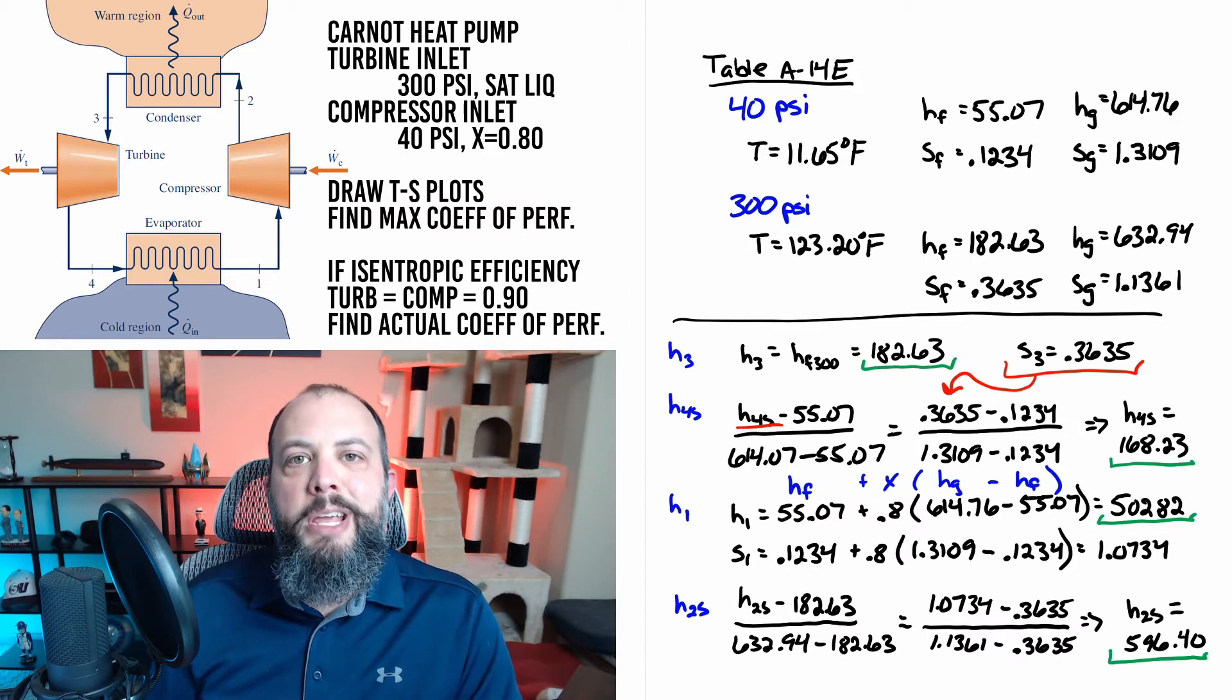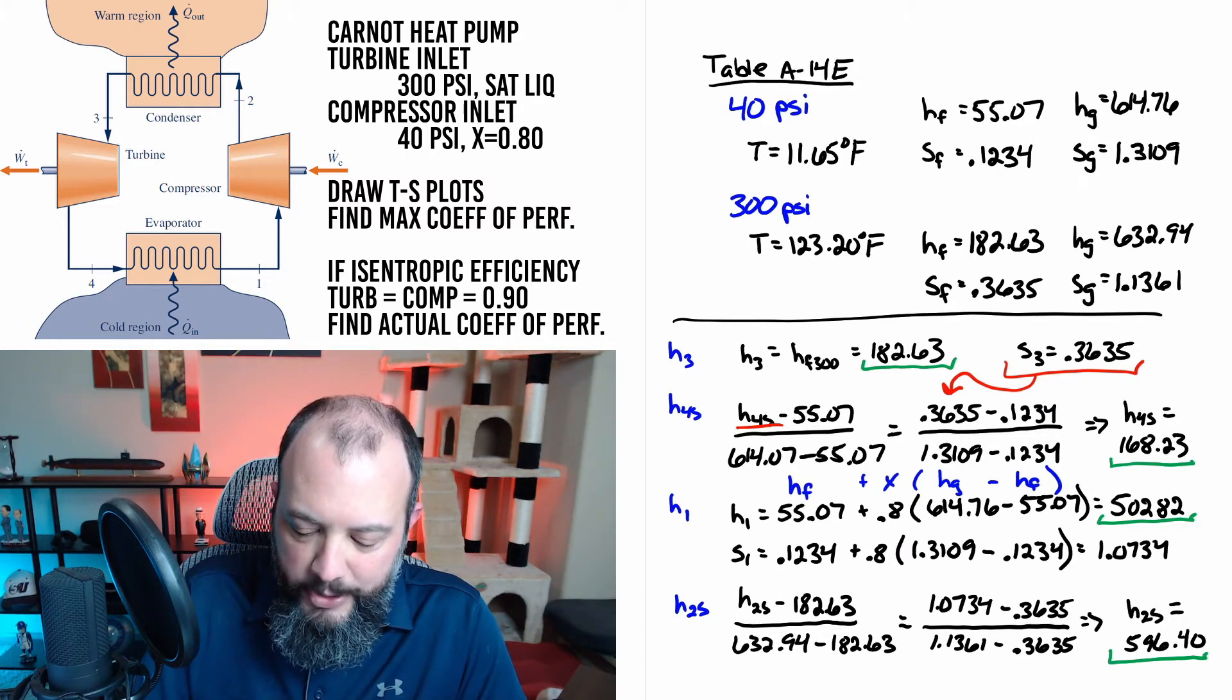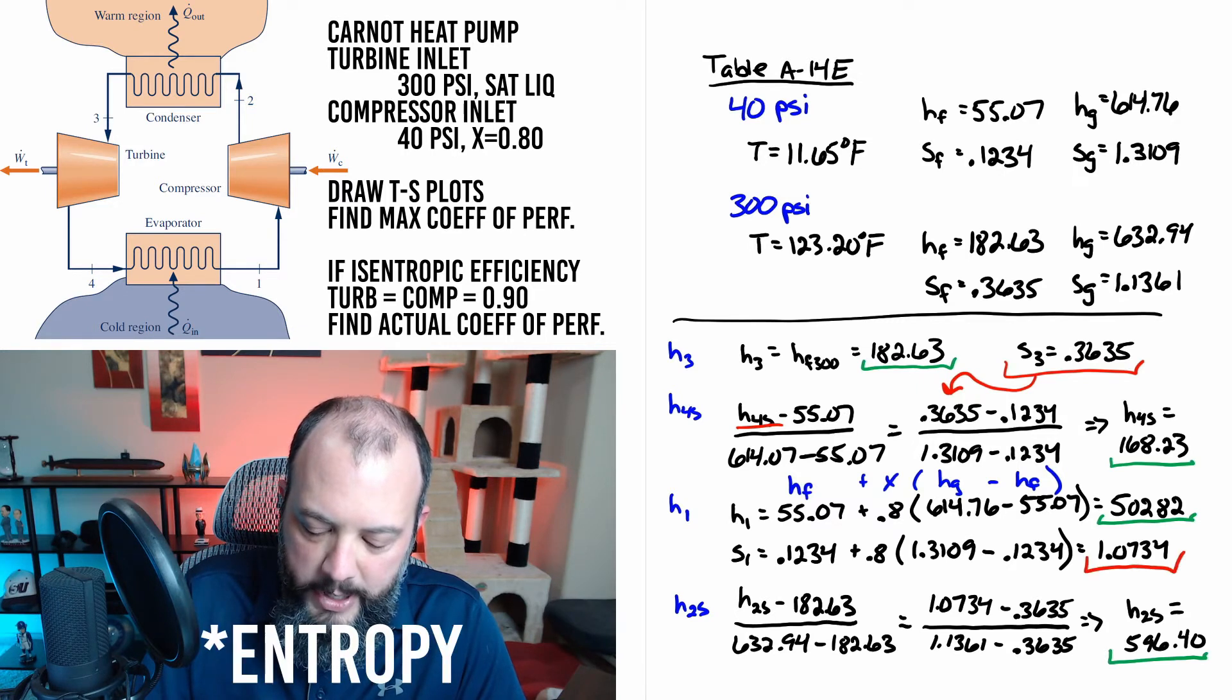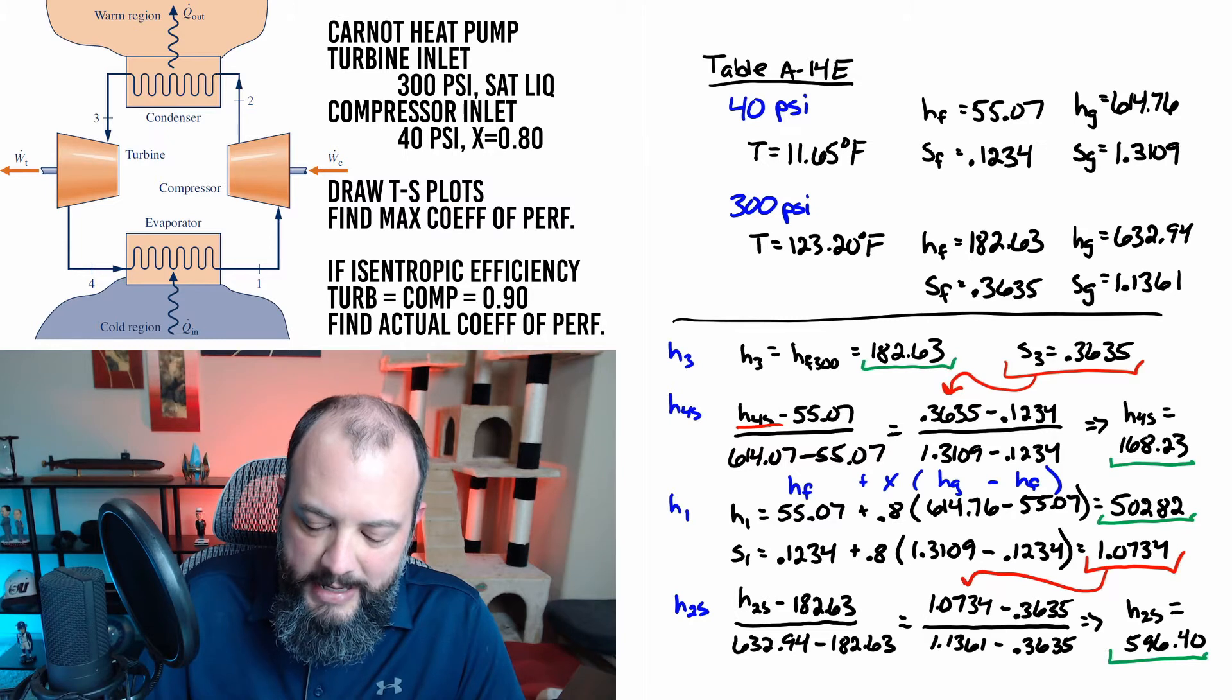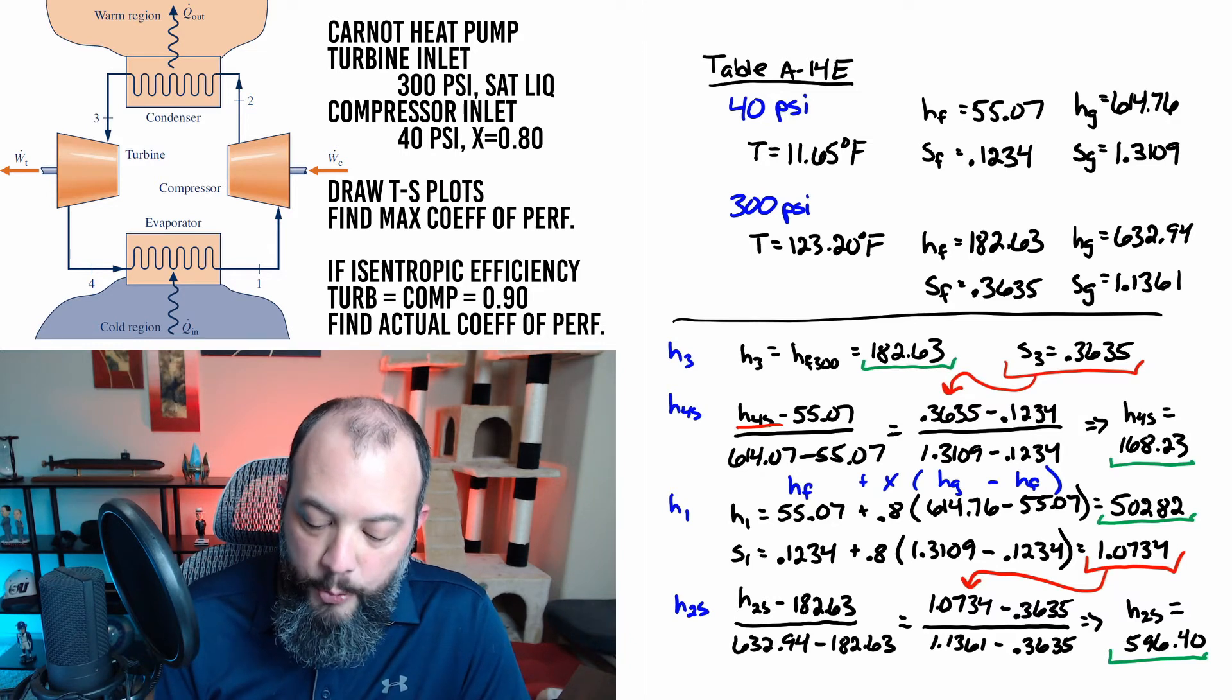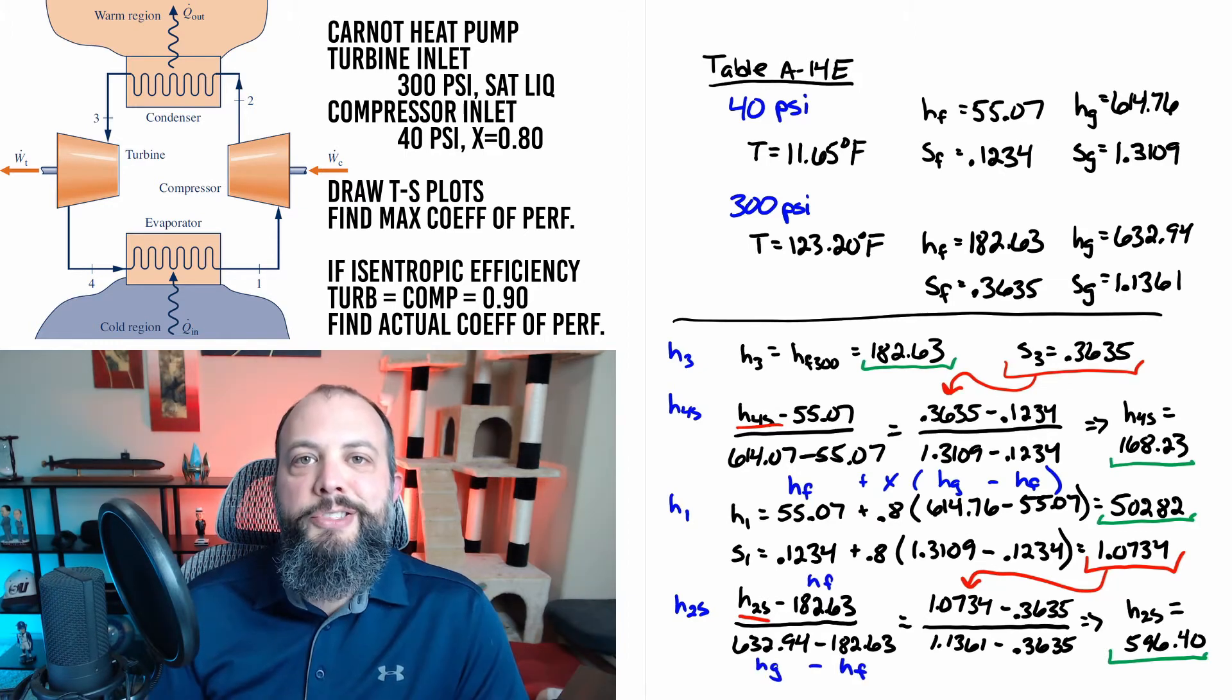And then lastly for enthalpy at point 2s we're going to repeat the same process as we found for H4s. Which means we're going to use the fact that point 1 to point 2s is an isentropic process that uses the same entropy from point 1 at point 2s. And so this right hand fraction represents the quality at point 2s in terms of entropy. And so the left hand side would also be quality but in terms of enthalpy which is why the left hand side is H2s minus Hf over Hg minus Hf. And this gives us the four enthalpy values for the Carnot heat pump.